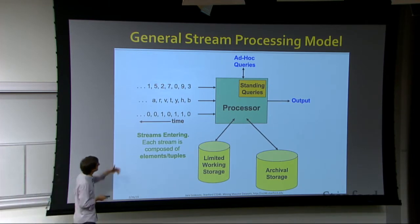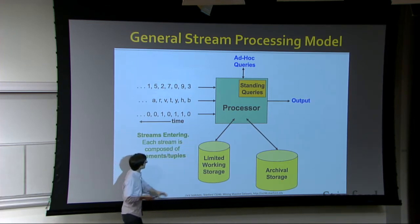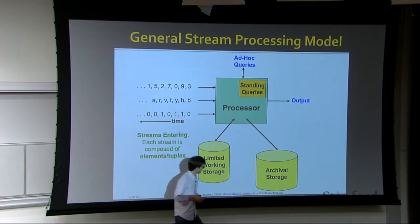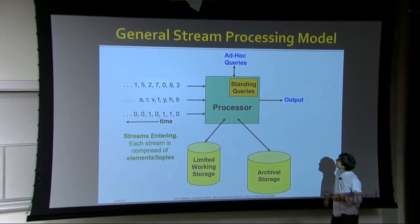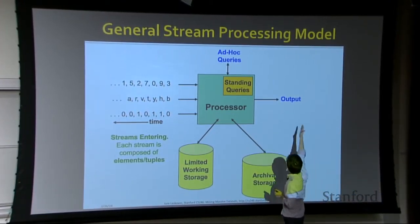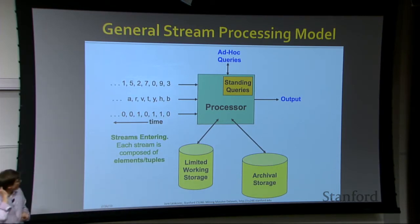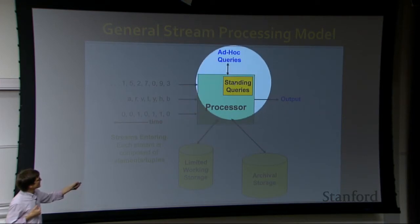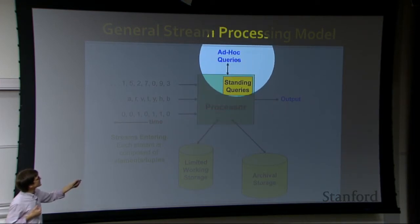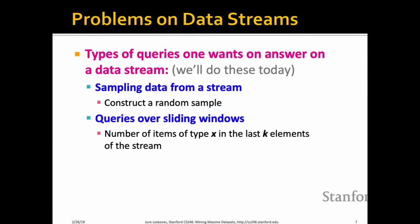Here is how we will think about streams going forward. Streams come into a stream processor. We will have a limited amount of working storage, potentially some archival storage, and queries will come in for which we want to give answers. What kind of queries can we answer and what algorithms do we use to answer them?